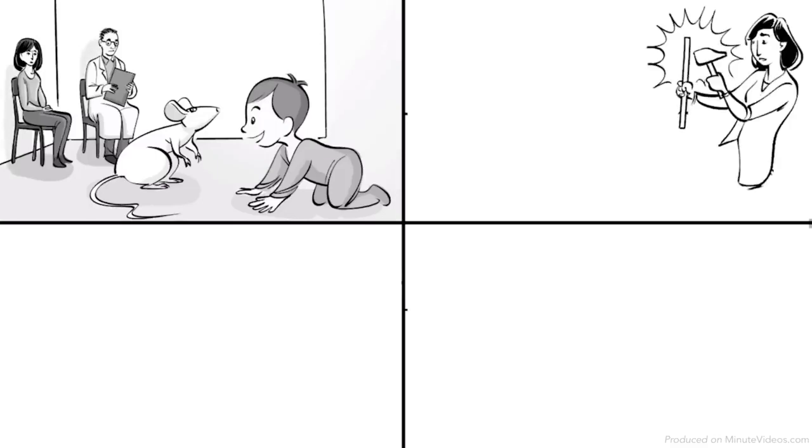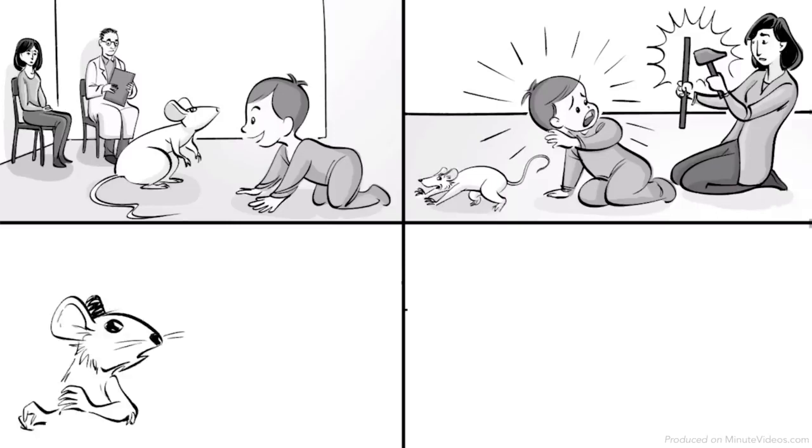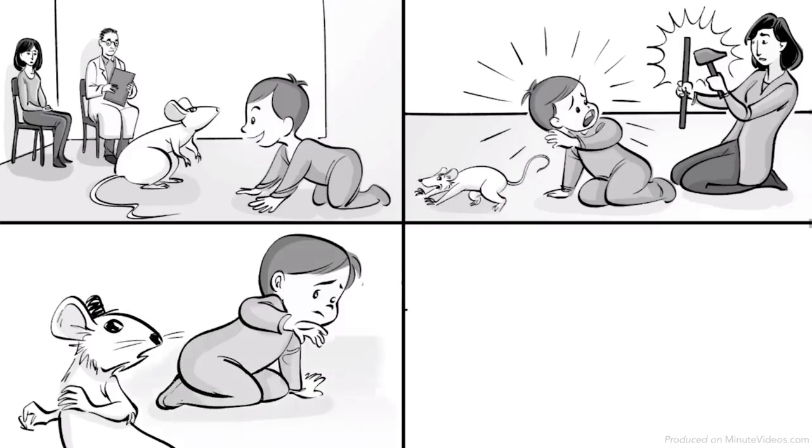Then, Rayner struck a steel bar with a hammer every time Albert reached out to touch the rat, scaring Albert and causing him to cry. Eventually, Albert tried to get away from the rat, showing that he had been conditioned to fear the rat.